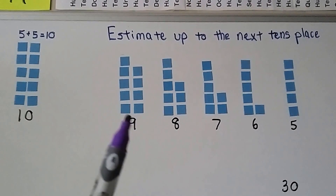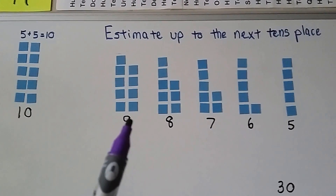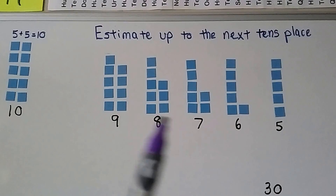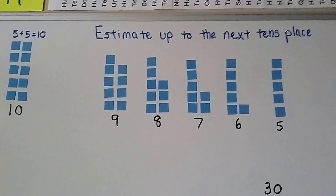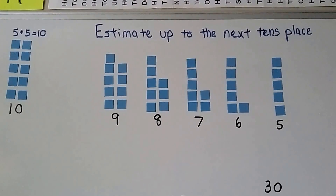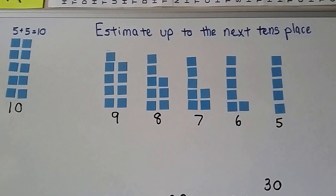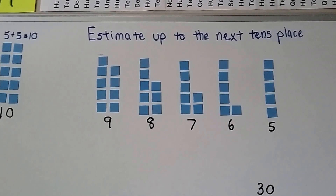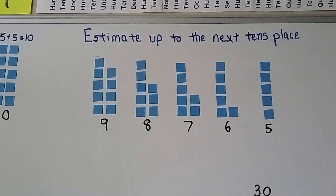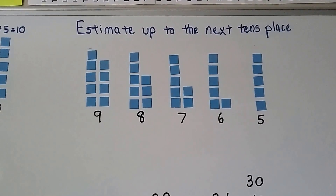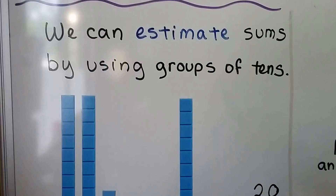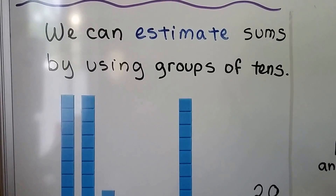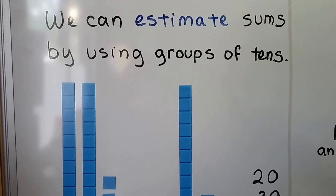So if you see a number that's got units in the ones place, and we're adding it to another number that has units in the ones place, we might be able to make another ten. We can estimate sums by using groups of ten.